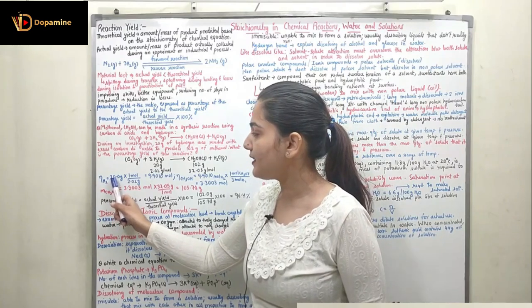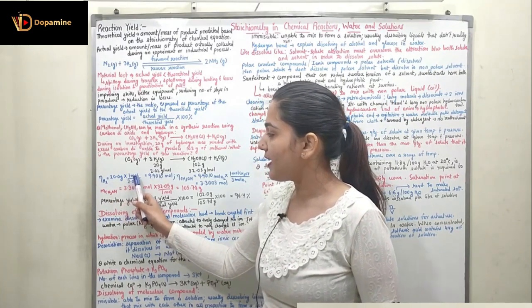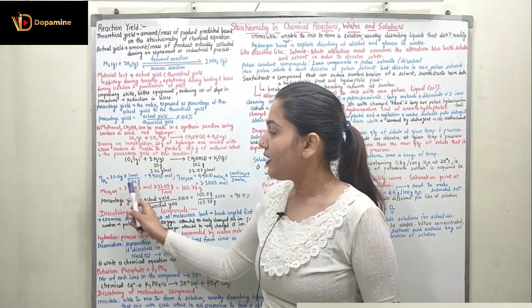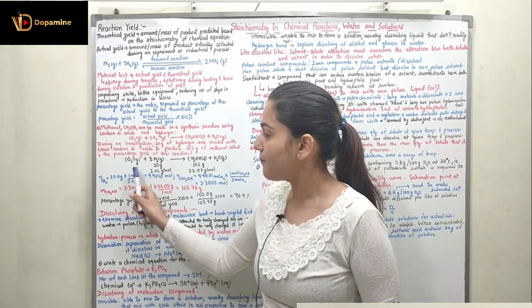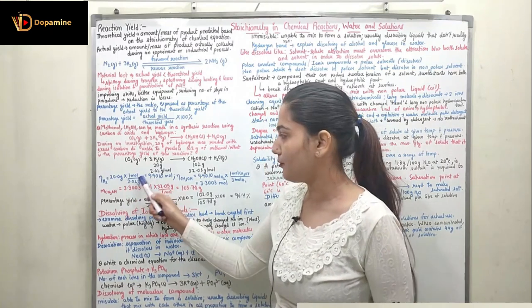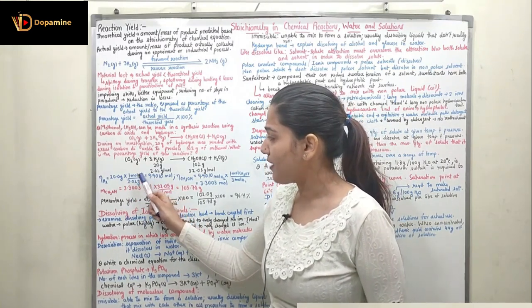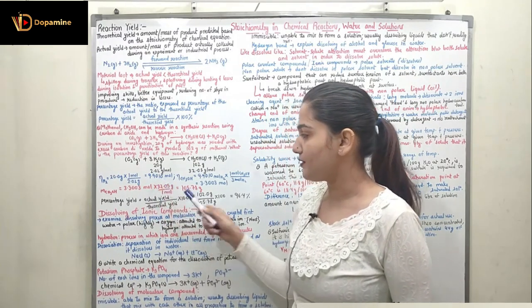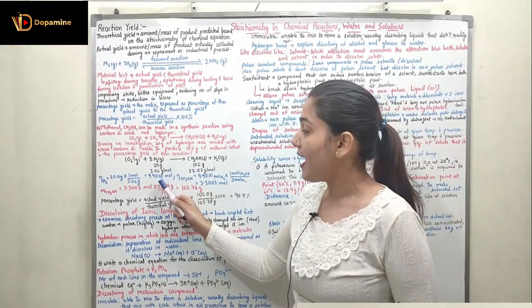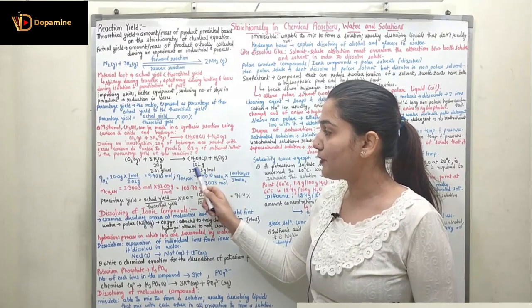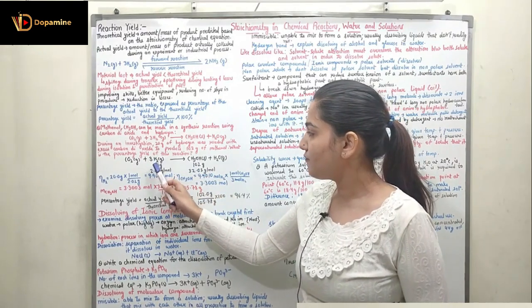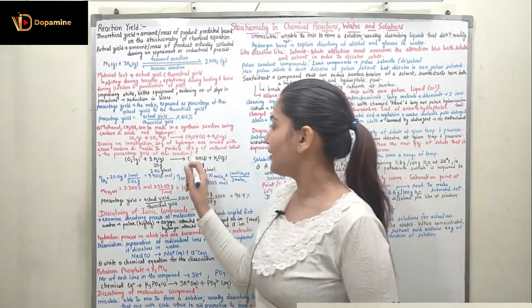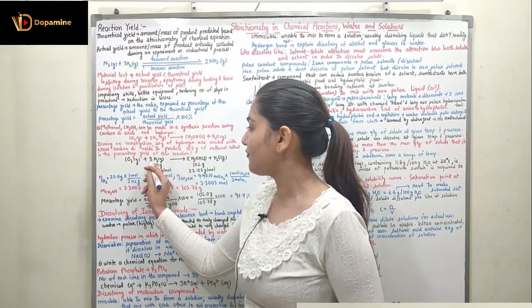The number of moles of H2 = 20.0 g × (1 mol / 2.02 g) = 9.9010 mol. From here we find the number of moles of methanol produced. The number of moles of methanol = (1/3) × moles of H2, since the coefficient for CH3OH is 1 and the coefficient for H2 is 3 in the balanced equation.